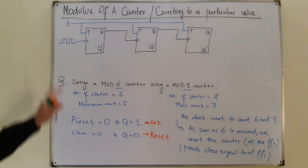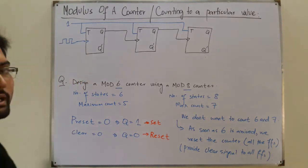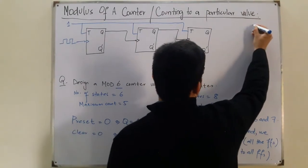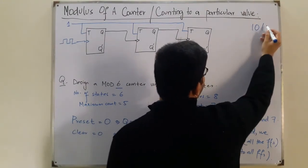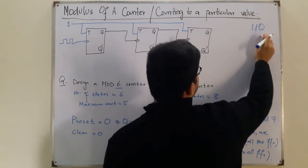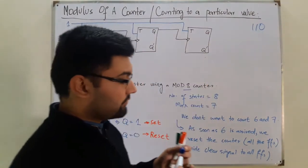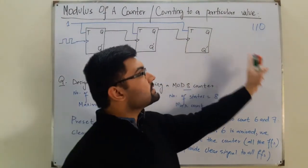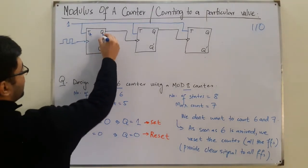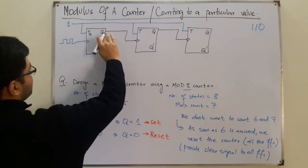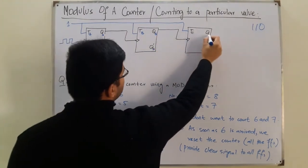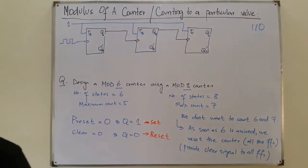This counter counts zero, one, two, three, four, five — till five it has counted. Now as soon as six arrives, which is 110 in binary (since 4 + 2 = 6), you have to reset the flip-flops. Let me label them: Q_A is the least significant bit, Q_B is the middle bit, and Q_C is the most significant bit.